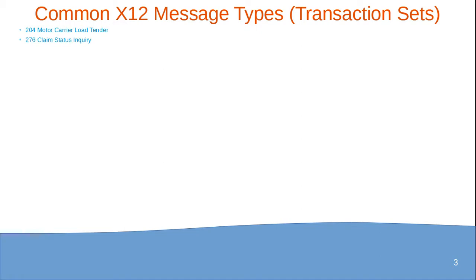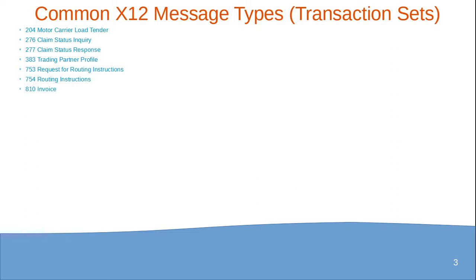Common X12 message type transactions widely used in industry include: 204 (Motor Carrier Load Tender), 276 (Claim Status Inquiry), 277 (Claim Status Response), 383 (Trading Partner Profile), 753 (Request for Routing Instructions), 754 (Routing Instructions), 810 (Invoice — one of the most used), and 820 (Payment Order/Remittance/EFT).